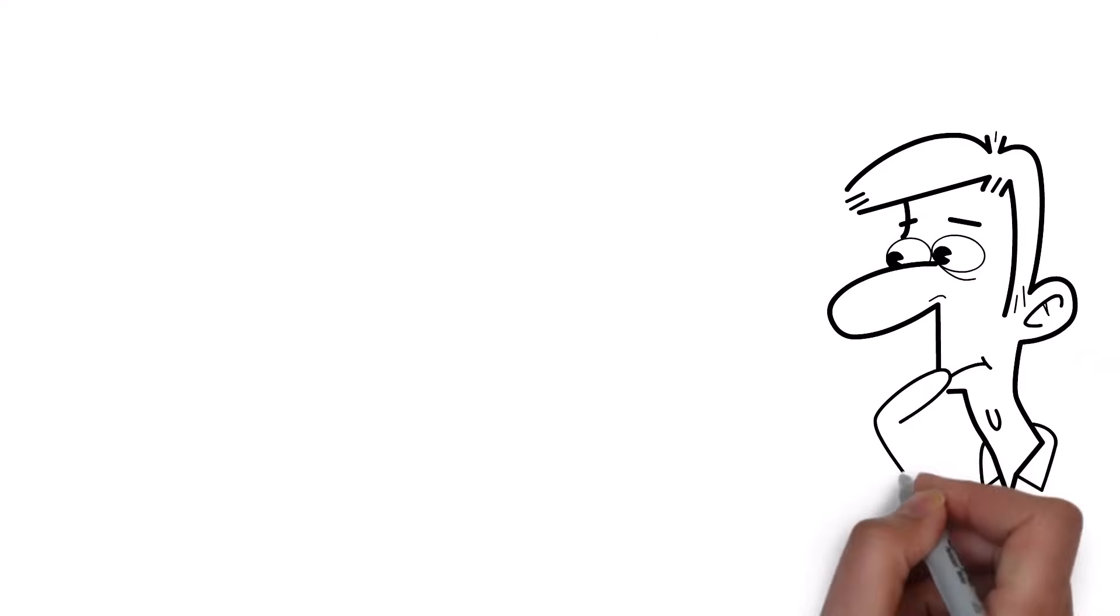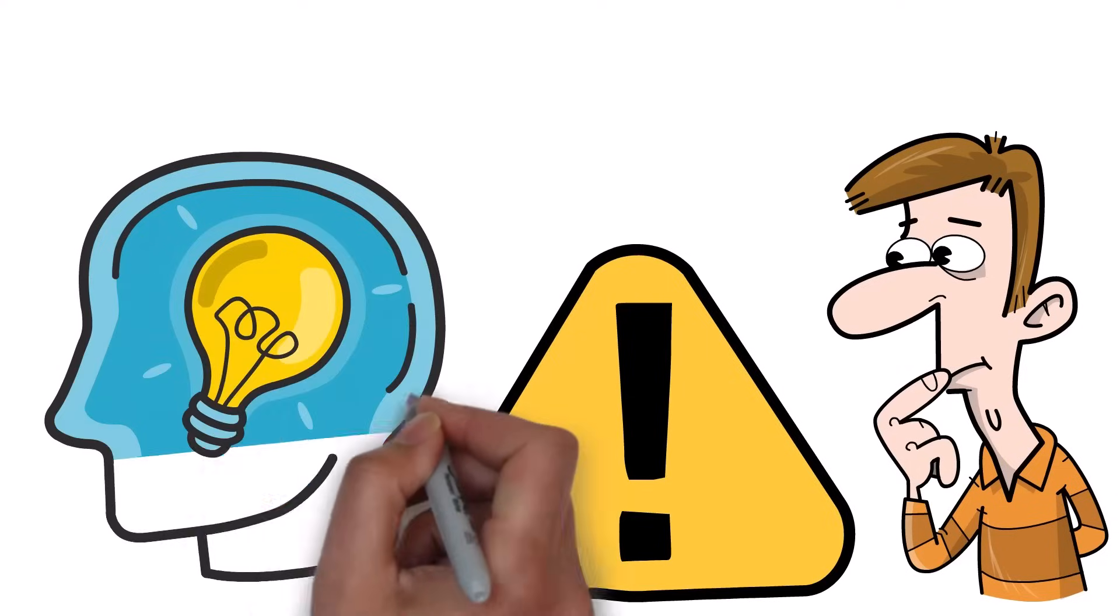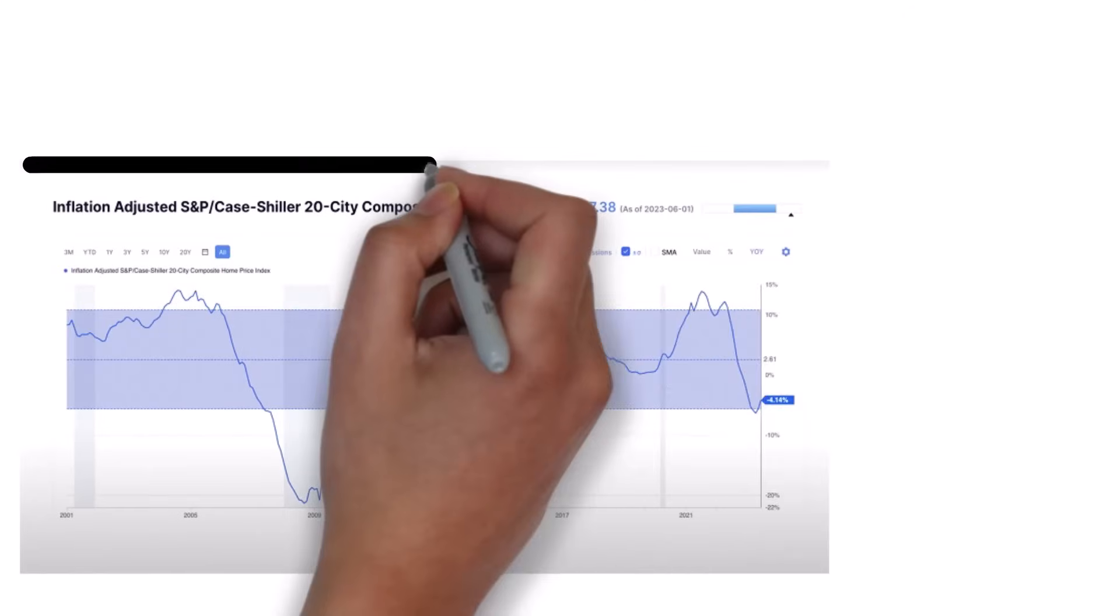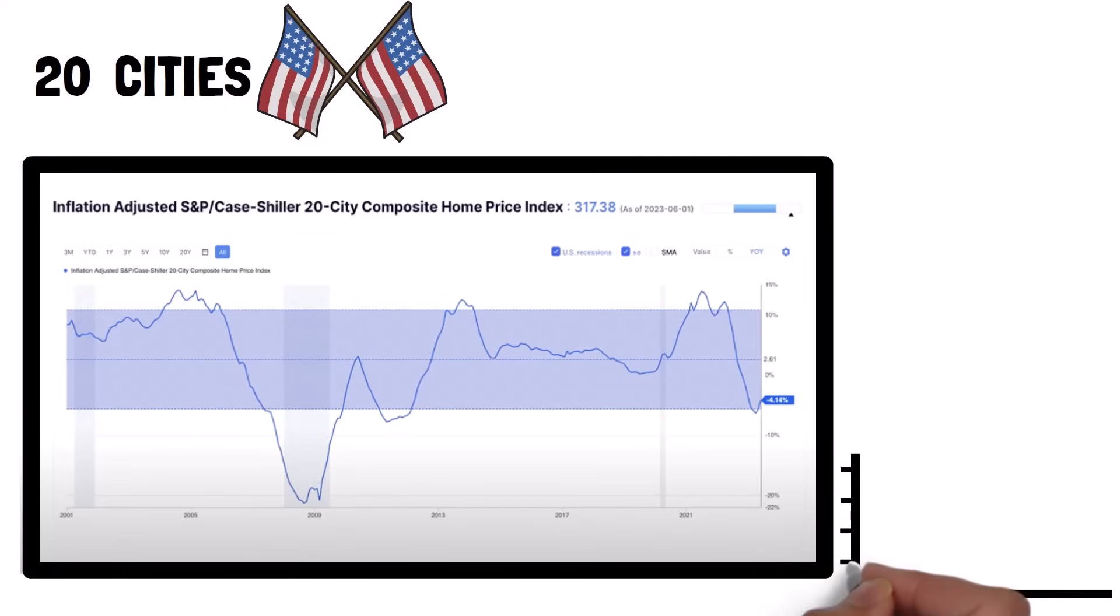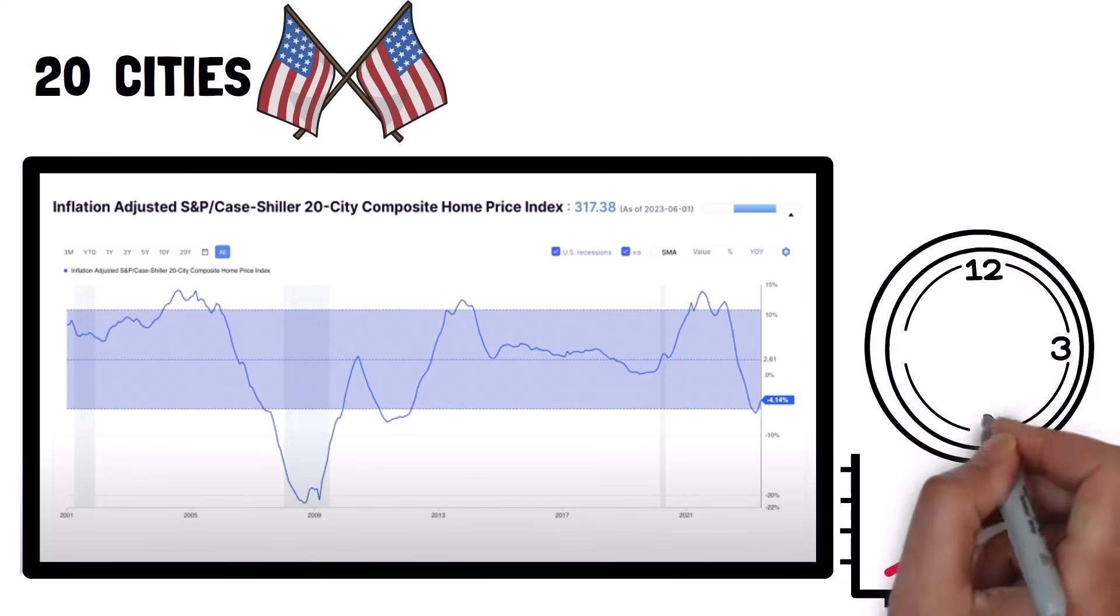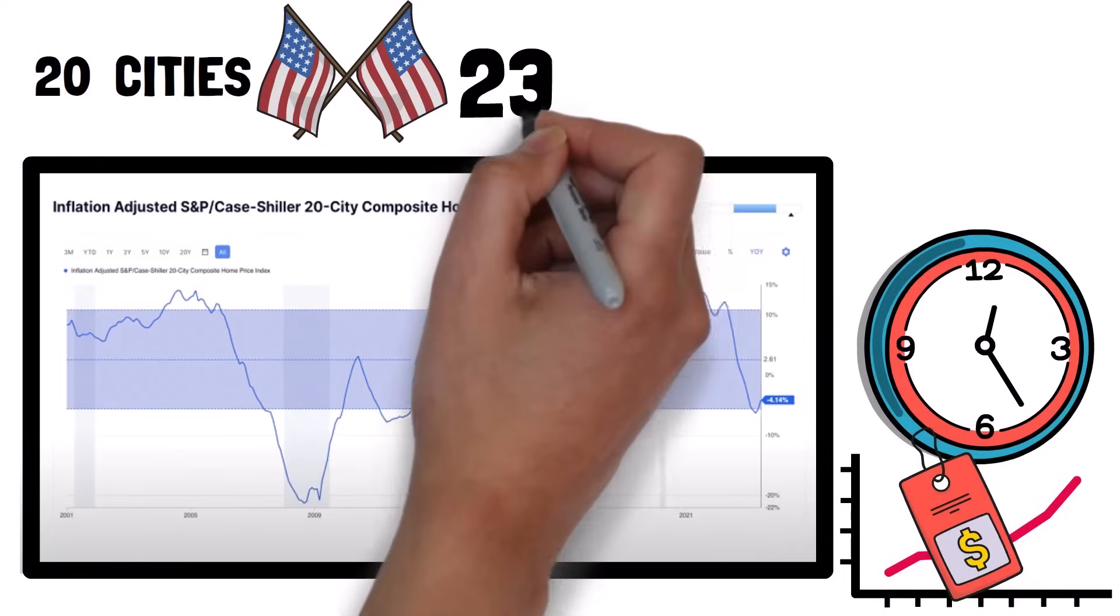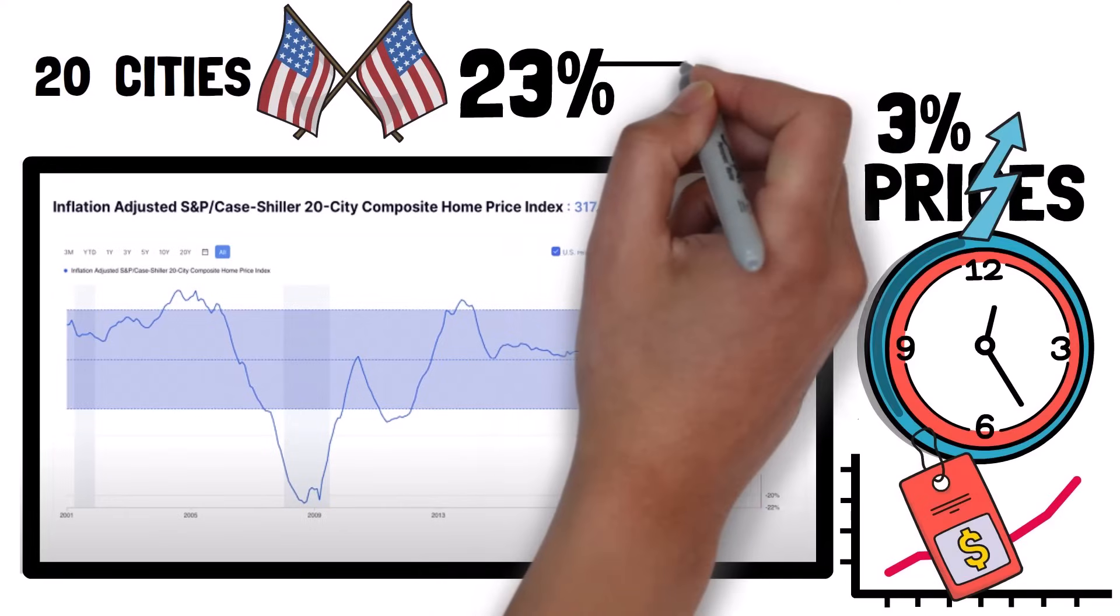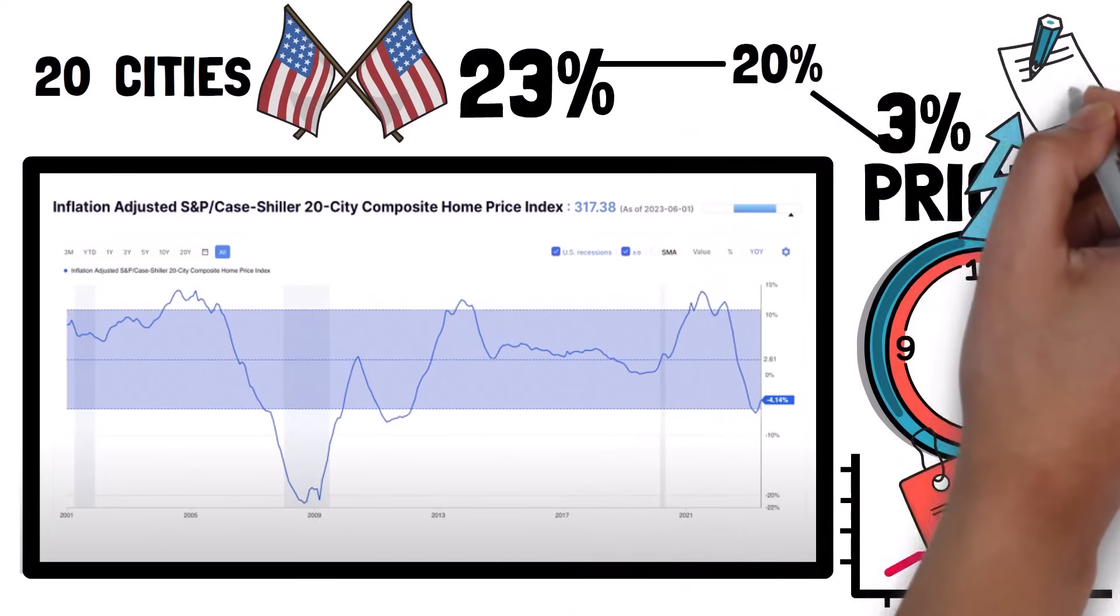When we look at everything together, it's hard to pinpoint one single problem. You have to use your thinking skills and see this as a mix of many factors. Now, let's look at a graph that shows the changes in the price of homes in 20 major cities in the U.S. They've adjusted this graph to take away the effect of inflation. Inflation is when things get more expensive over time. For example, if something goes up 23% in a year, but prices in general are going up 3%, then the actual increase is about 20%. I wanted to explain this before we talk about the data.